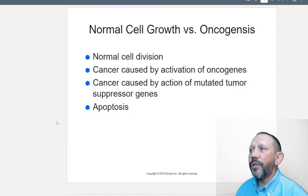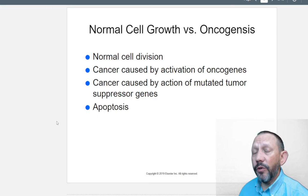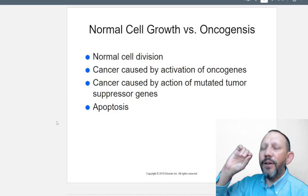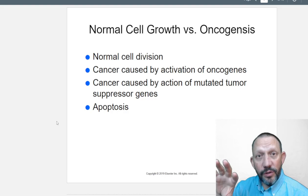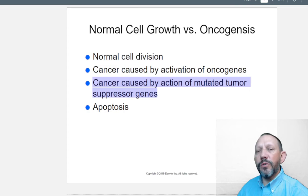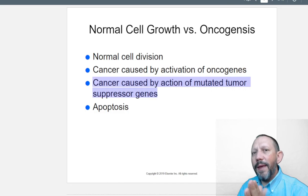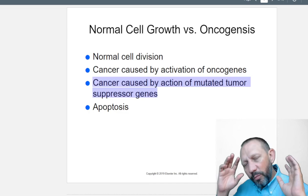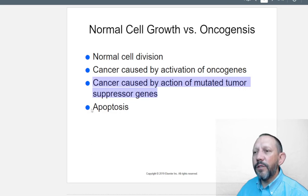Oncogenesis is cancer growth, as opposed to normal cell division — the interphase, prophase, metaphase, anaphase, telophase process ending in apoptosis. Cancer is caused by activation of oncogenes, or by action of mutated tumor suppressor genes. Genes are like recipes for making new parts, and if they don't copy properly, the result can be cancerous. Apoptosis is programmed cell death.